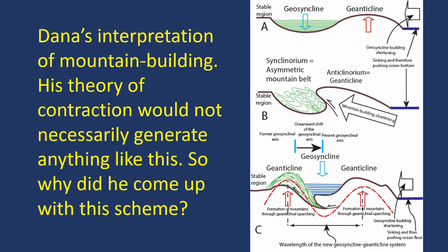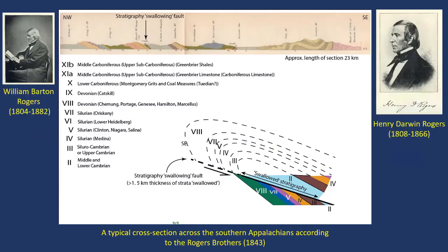So why did he come up with this scheme? Why did he think that shortening would create this asymmetric structure? His theory doesn't require that. The reason why he did that is because he cheated. He used observations by the Rogers brothers across the Appalachians, and the Rogers brothers had shown conclusively that the Appalachians had a completely asymmetric structure. In fact, some of the faults, they said, swallowed stratigraphy — the stratigraphy disappeared beneath them, which shows a lot of shortening.